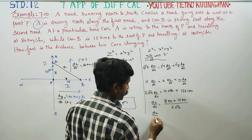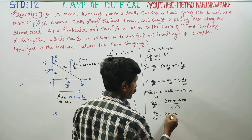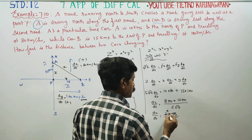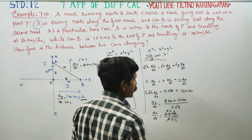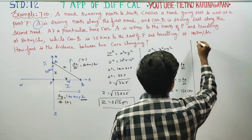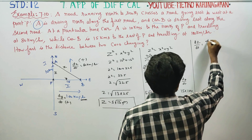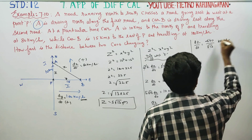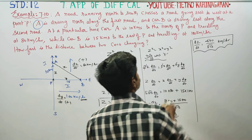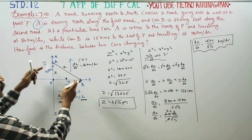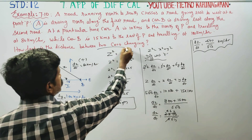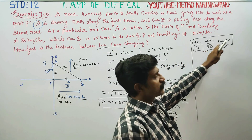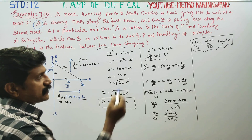Therefore dZ/dt = 2300 / (5√13) = 460/√13 km/hr. The rate of change of distance between the two cars, dZ/dt, is 460/√13 km/hr. This is your final answer.